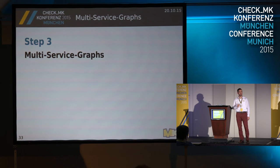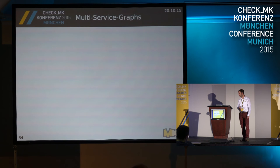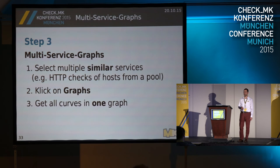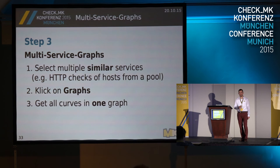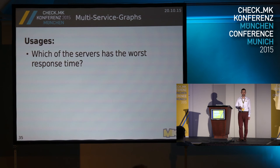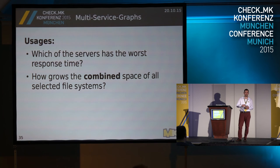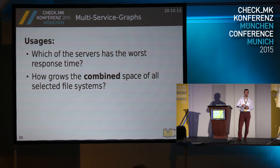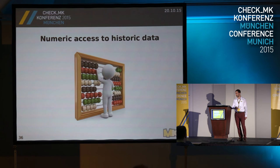Step three is the third variant of graphing. There are situations where you have a pool of ten web servers and want to see them in one graph for comparison. In multi-site you could look up services — for example HTTP in host group X — click multi-graph, and there is the graph using the already available template, but instead of one value you have ten values in different colors. You can say I would like to see the sum or the maximum, or highlight exceptional values. With every list of services there would be one multi-graph button. Use cases include: which server has the worst response time? Combine all disk space — how is total usage growing? Or for a trunk with two ports, show combined traffic instead of per-port traffic.